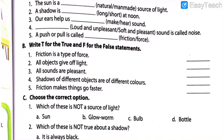All sounds are pleasant — do we like to listen to all types of sounds? Not necessarily; sometimes we get irritated by certain sounds. So all sounds are pleasant is false — just as all objects are not luminous, all sounds are not pleasant. Next: Shadows of different objects are different colors — no, whatever clothes you wear, your shadow will be black, so false. Finally: Friction makes things go faster — because of friction things actually slow down, so this statement is also false.